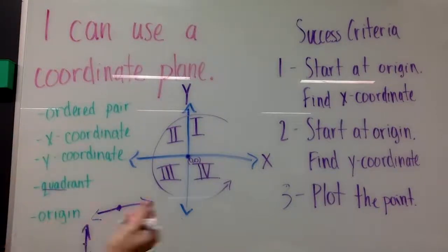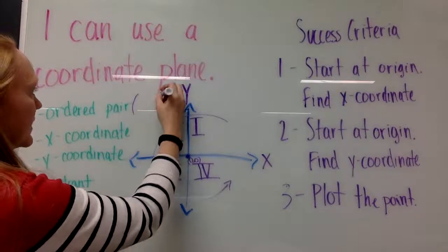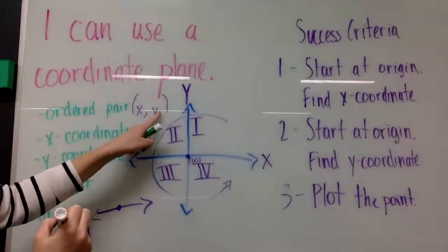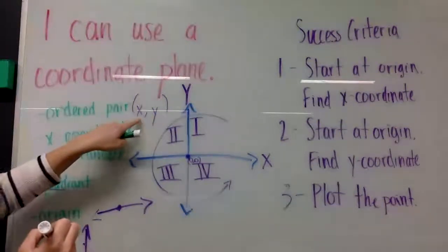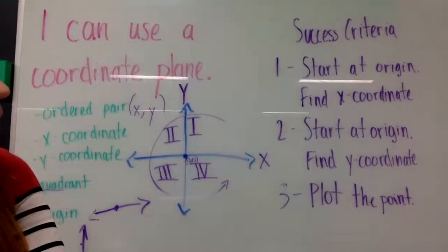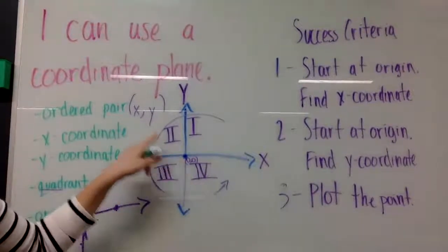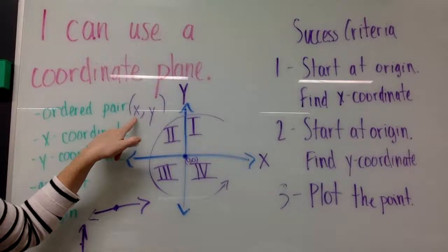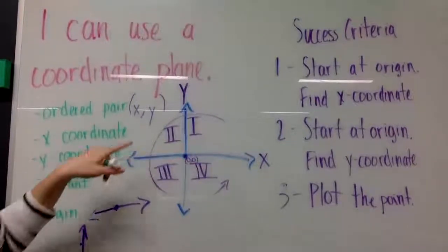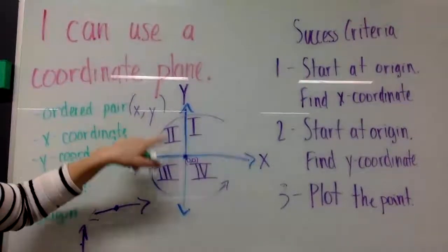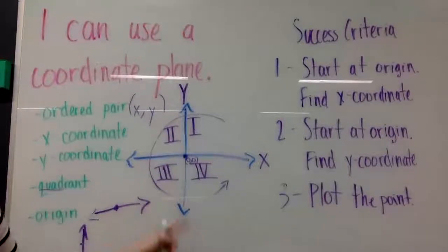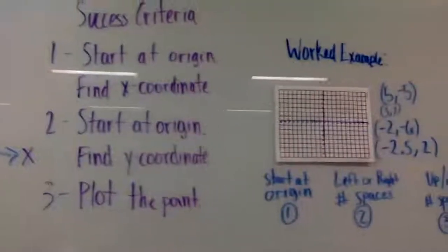When you plot a point on the coordinate plane, you will plot it as an ordered pair. Ordered pairs are in parentheses and they will be in the form x comma y. This means our x coordinate is listed first, then a comma, then our y coordinate. When you plot points, you always start at the origin, look at the x coordinate and find it on the x-axis, then look at the y coordinate and find it on the y-axis.